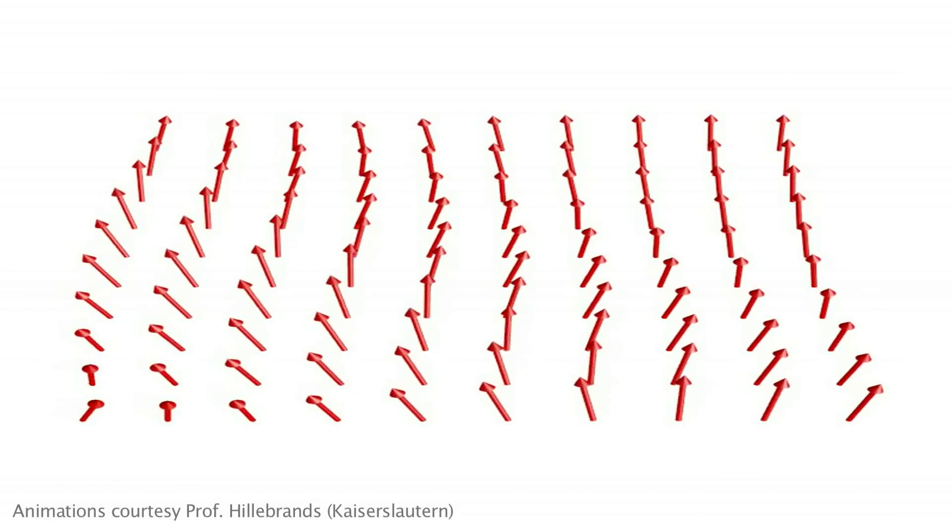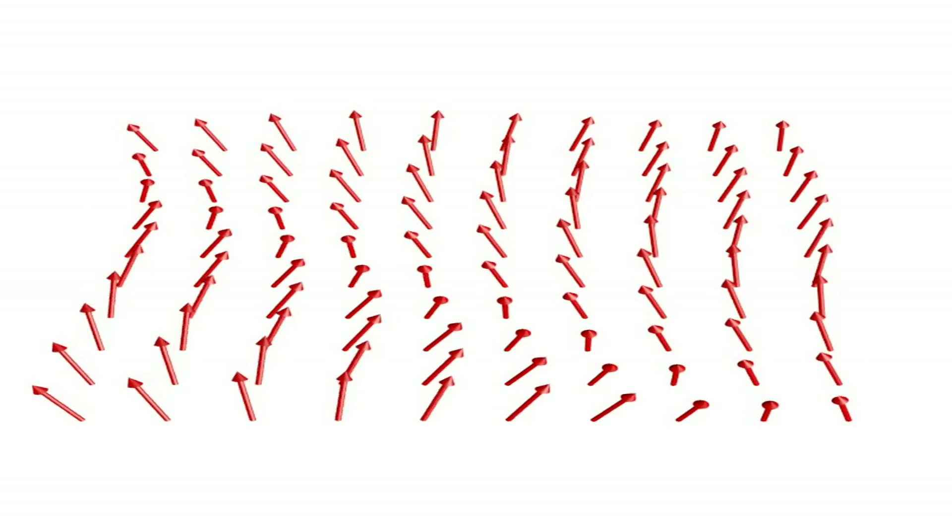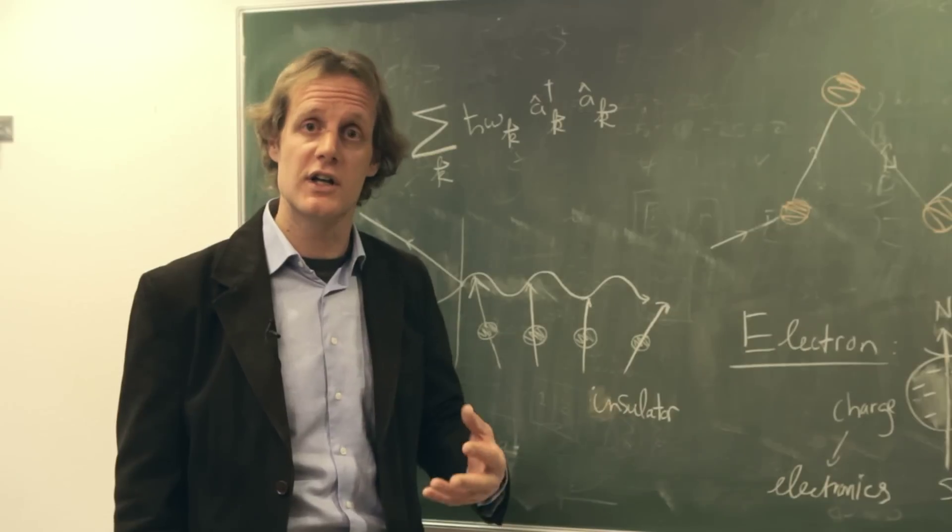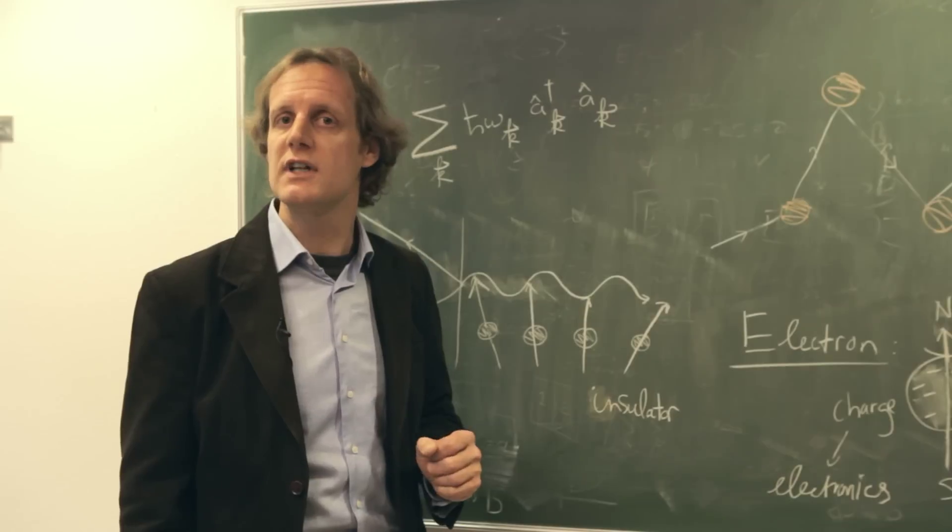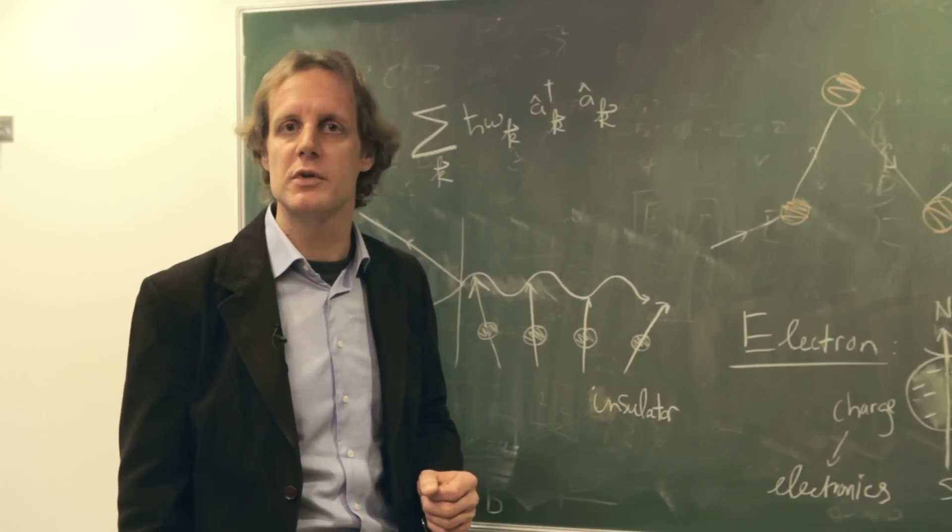Now the ultimate goal of this FOMP program is to control the spin property and this wave-like motion in such a manner that we can actually build the spin equivalent of a room temperature superconductor.